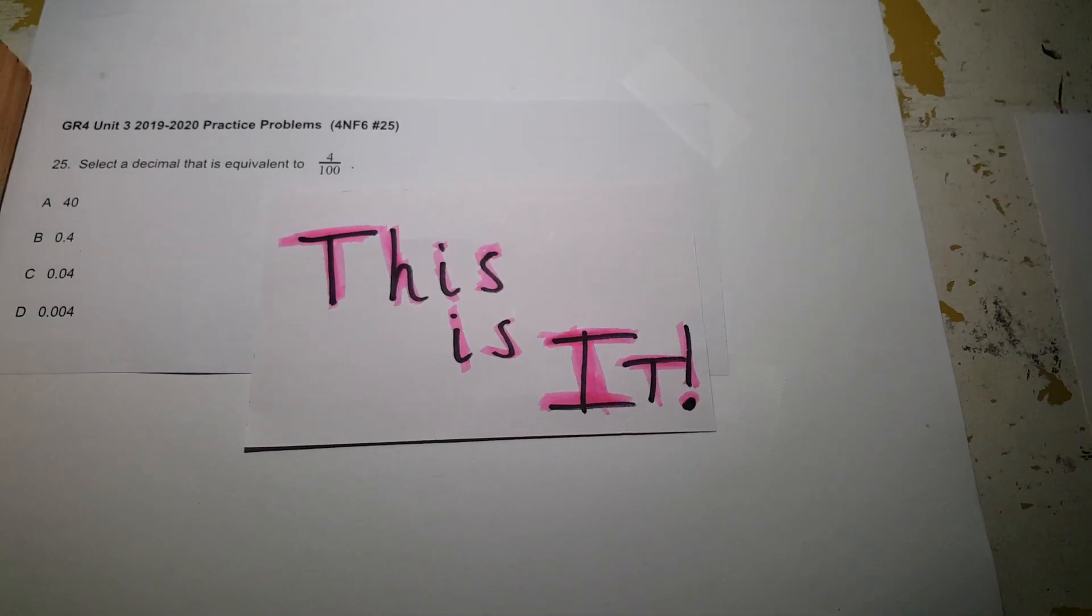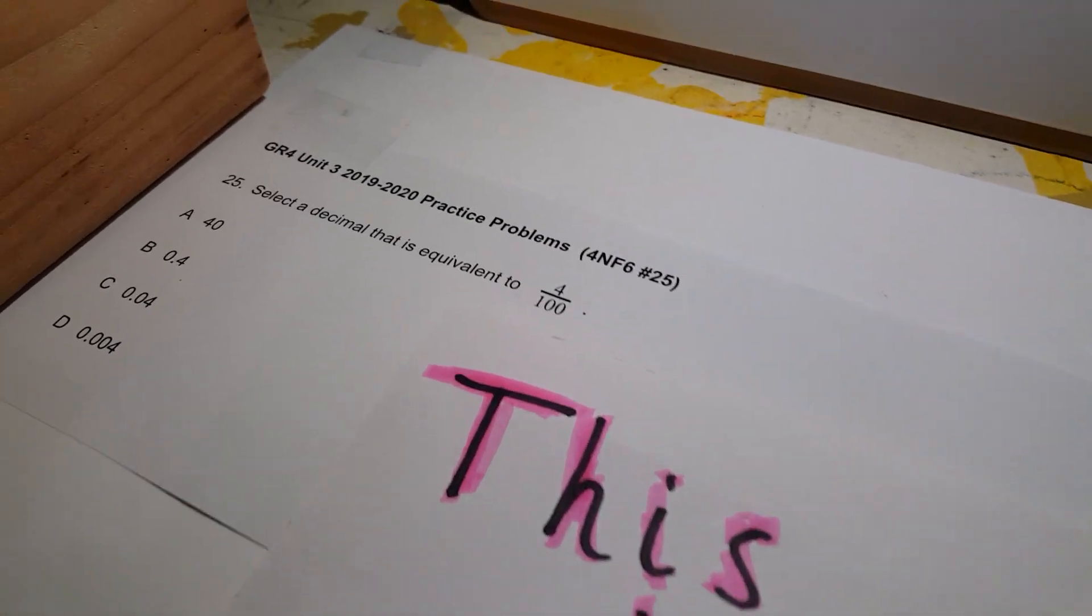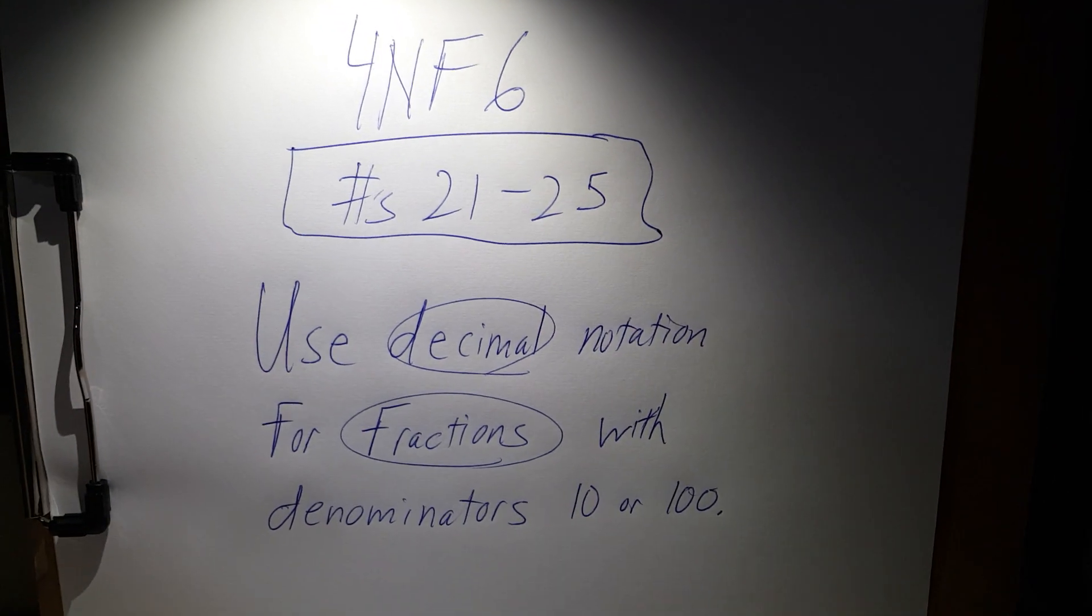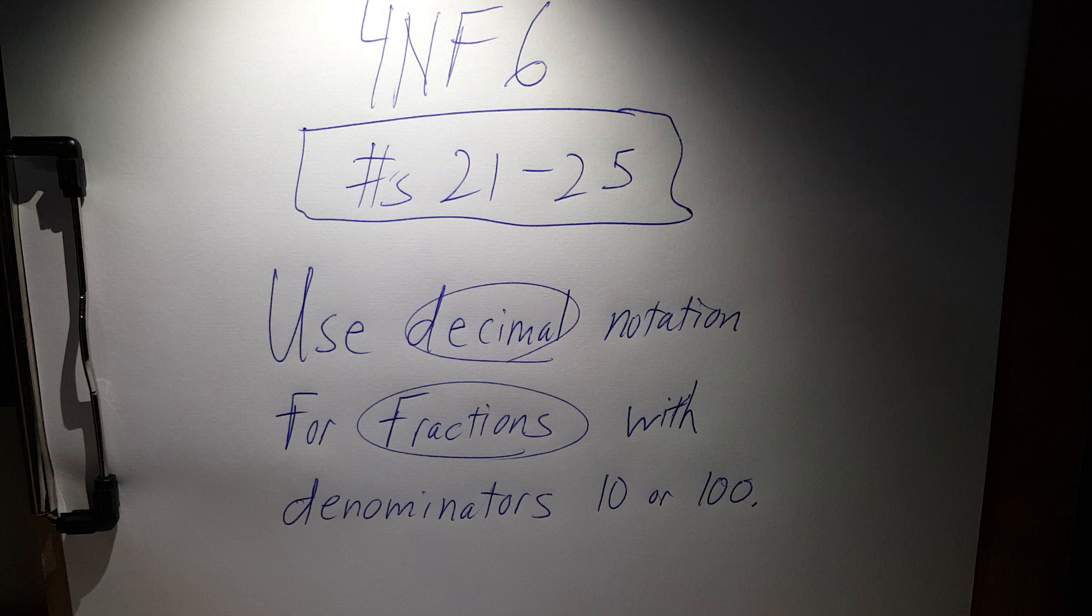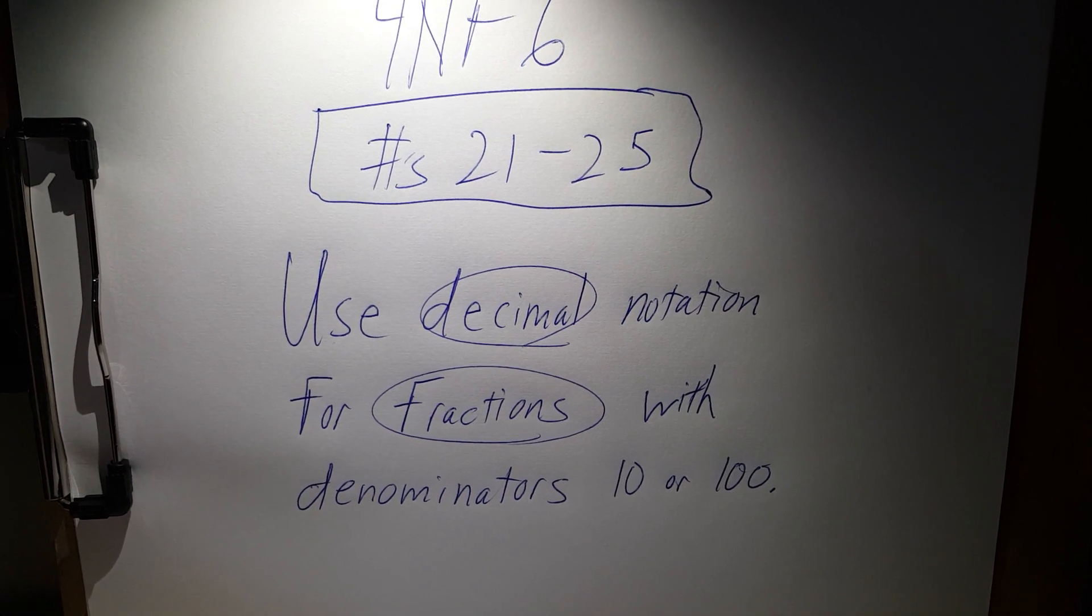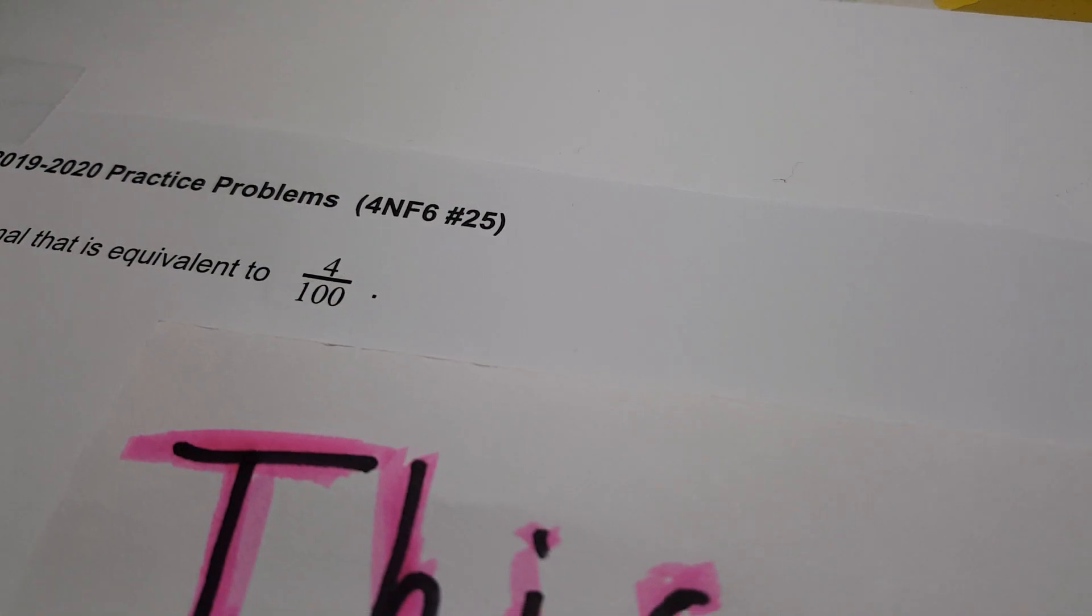Everyone, the end is here. The marathon. We are on number 25, last one for standard 4.NF.6, numbers 21 through 25. Use decimal notation for fractions with denominators 10 or 100. That looks like 100 to me, so that's 100.